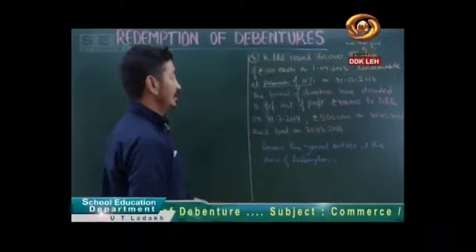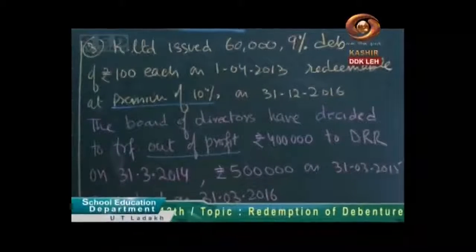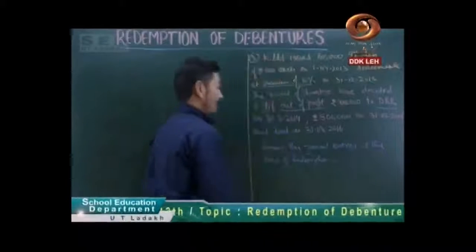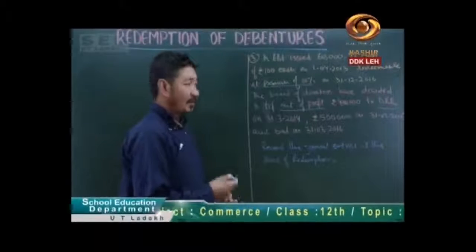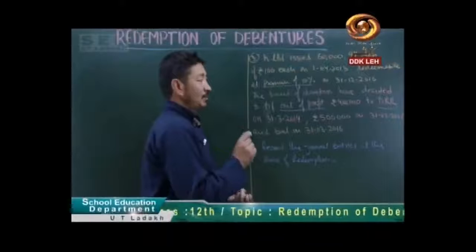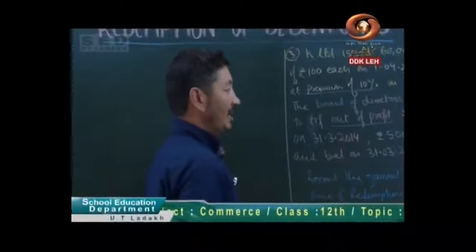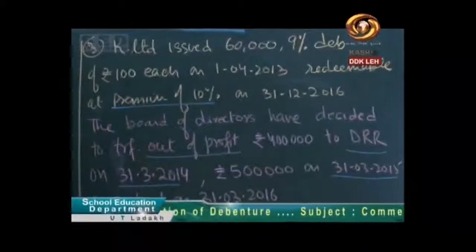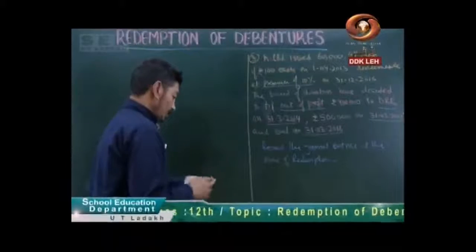Now on 31st December 2016, the board of directors have decided to transfer out of profit. The board of directors decided that we will redeem the debenture, with Debenture Redemption Reserve as per the Companies Act 2013. It has been written that if the company is going to redeem the debenture, we need a Debenture Redemption Reserve. So we will redeem it in December.